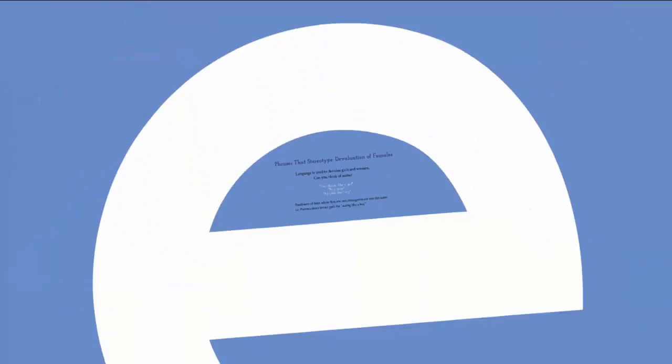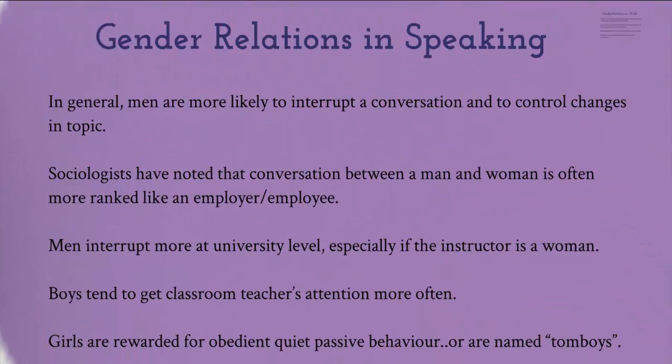What about gender relations and speaking? In general, we find that men are more likely to interrupt a conversation and control changes in topic — this is from Meyer's textbook on psychology. Sociologists have noted that conversations between a man and a woman are often more ranked, like an employer-employee conversation might be. Men tend to interrupt more at the university level, especially if the instructor is a woman. Boys tend to get classroom teachers' attention more often, and girls are usually rewarded for being obedient, quiet, and passive so that they're called a 'nice girl' — otherwise they have a negative connotation and are called tomboys.